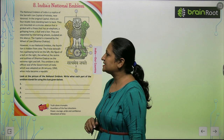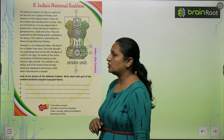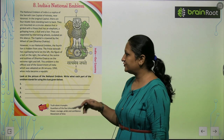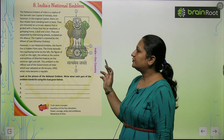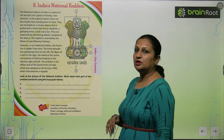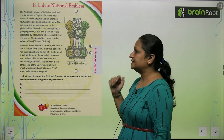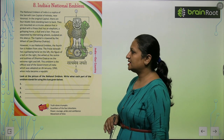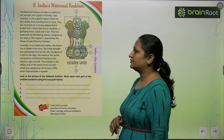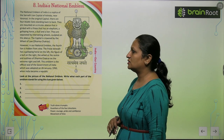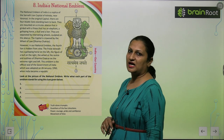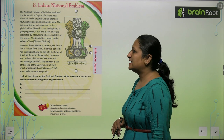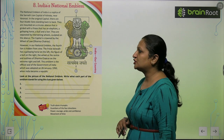The frieze beneath has a galloping horse on the left, the figure of a bull on the right, the wheel at the center, and the outline of Dharma Chakras on the extreme right and left.